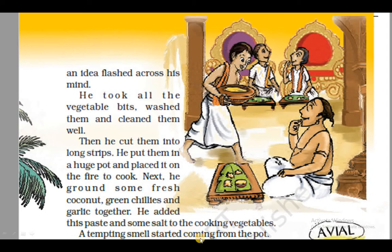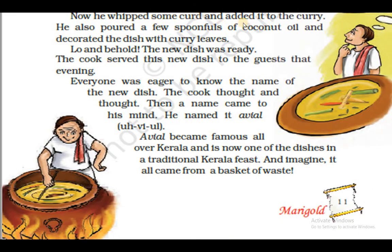Next, he ground some fresh coconut, green chilies and garlic together — grind ki second form ground. Uske baad usnei taza coconut, hari mirche aur garlic ko ikattha mix karke ground kiya. He added this paste and some salt to the cooking vegetables — usnei is paste ko aur kuch namak ko ush pakti hue vegetables mein mix kiya. A tempting smell started coming from the pot — tempting: lubha dene waali, achi lagne waali — ek achi lagne waali smell ush pot mein se aani shuru ho gayi. Now he whipped some curd and added it to the curry — aur usnei kuch dahi ko whipped kiya aur usko us curry mein mila diya. He also poured a few spoonfuls of coconut oil — usnei ush vegetable mein kuch coconut oil ke spoons milaaye. And decorated the dish with curry leaves — curry leaves: meethi neem ki patiyaan — aur usnei ush dish ko curry leaves se decorate kiya, saja diya.